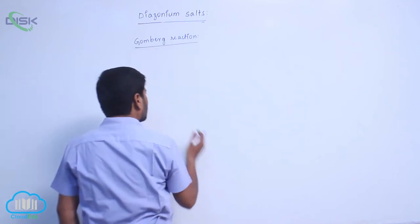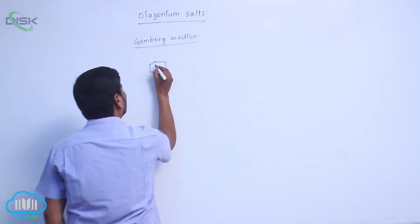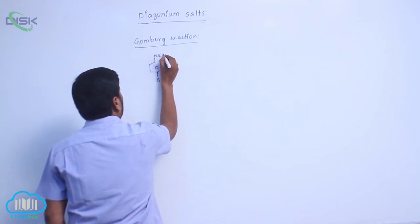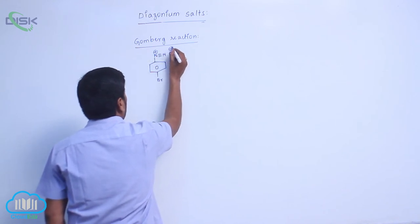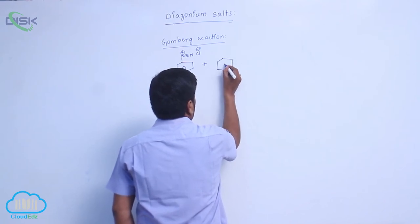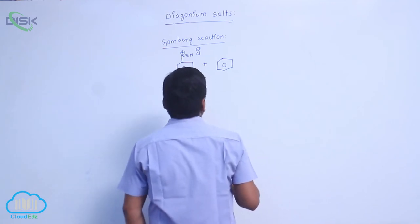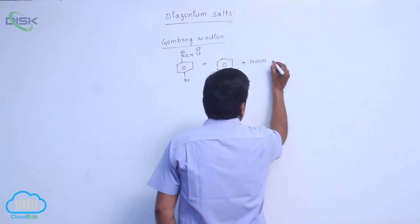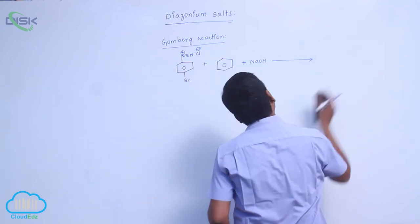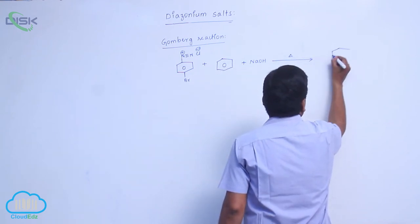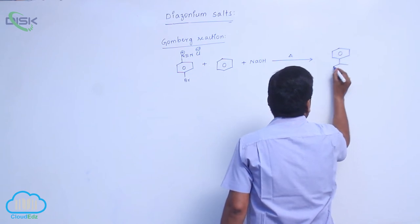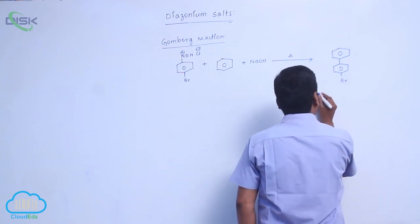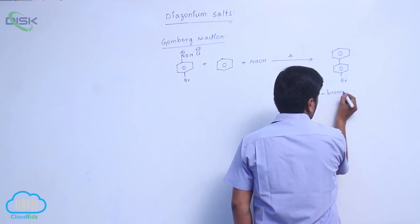Gomberg reaction. This is N triple bond N, which carries a positive charge; this is Cl minus. When meta-bromo or para-bromo benzene diazonium chloride reacts with benzene in the presence of sodium hydroxide, it forms a substituted biphenyl — this is known as para-bromo biphenyl.